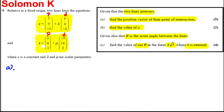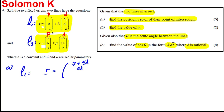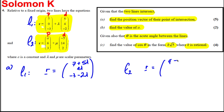For part a, it's usually easier to write these as a combined vector. So line one is: R = (7 + 5λ, 0 + 4λ, −3 − 2λ). Line two is: R = (a − 5μ, 6 + 14μ, 3 + 2μ).